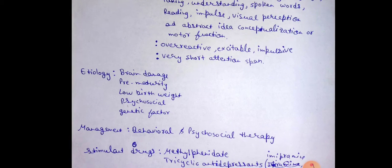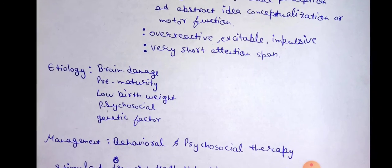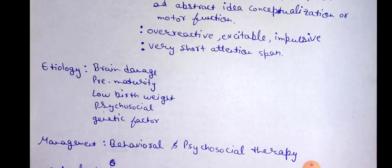We have talked about etiology. There are five etiological factors: brain damage, prematurity, low birth weight, and psychological or genetic factors.